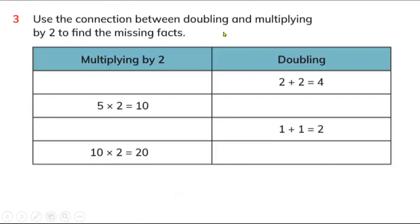Here we have question number three, which shows multiply by 2. So 2 plus 2 equals 4. How many times do we have 2? We have 1 and we have 2. So 2 times 2 equals 4.